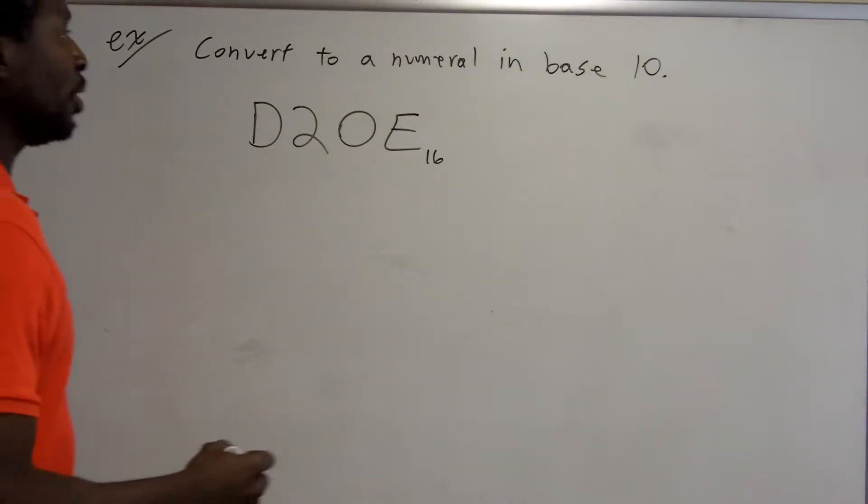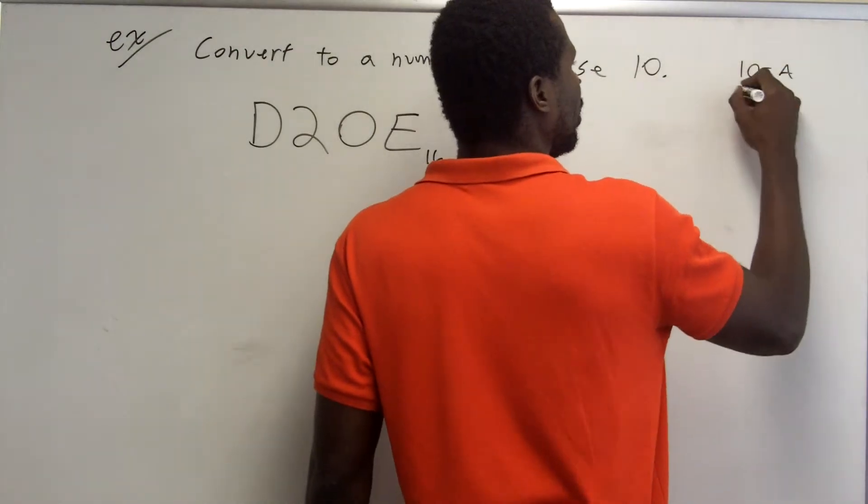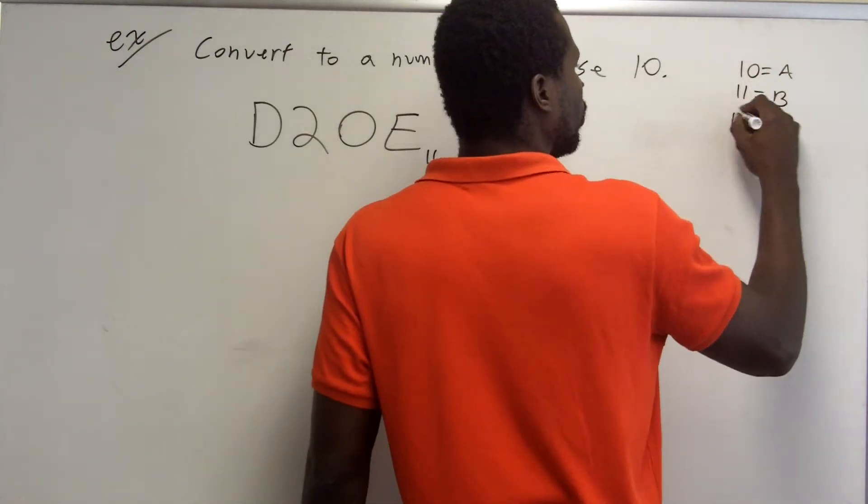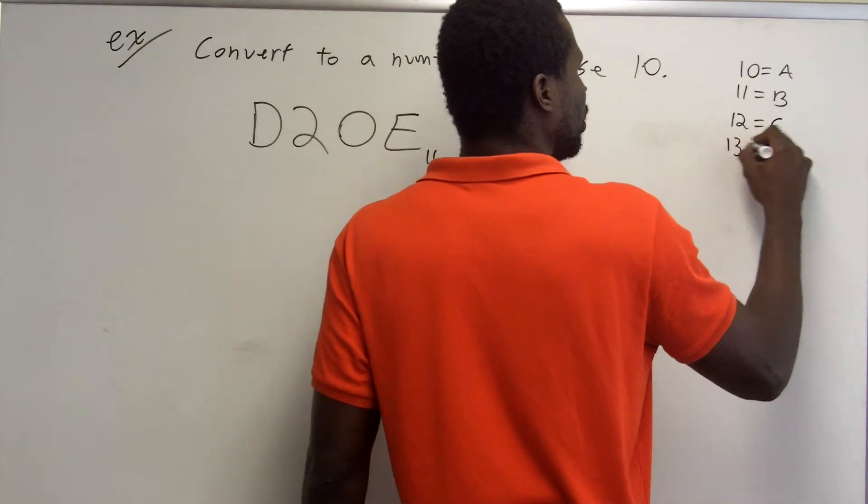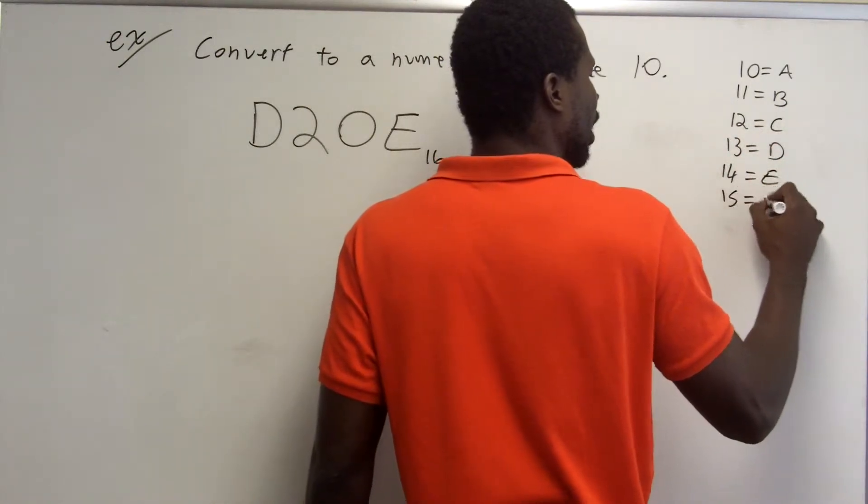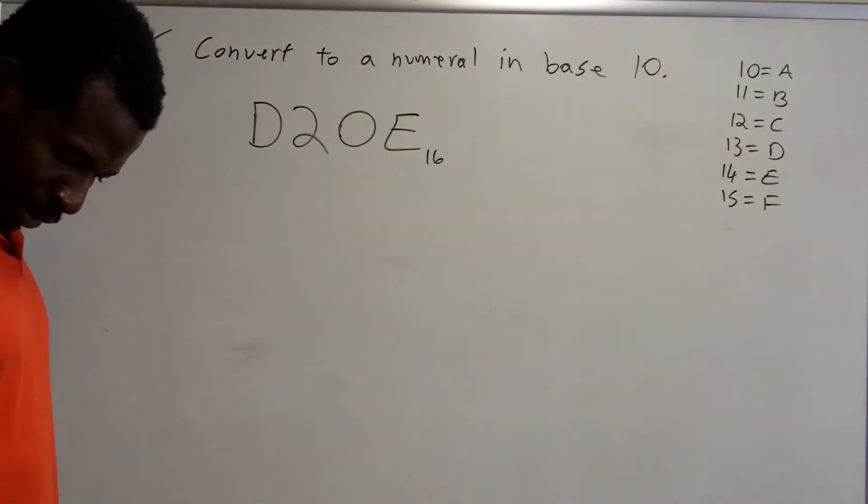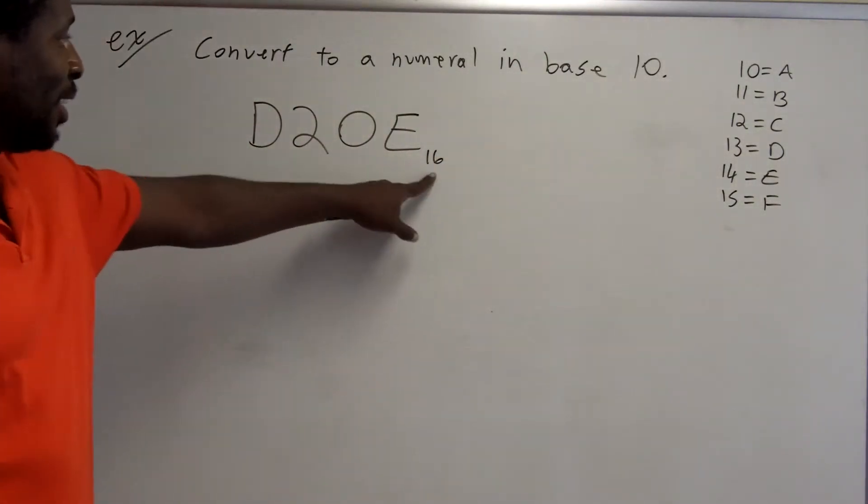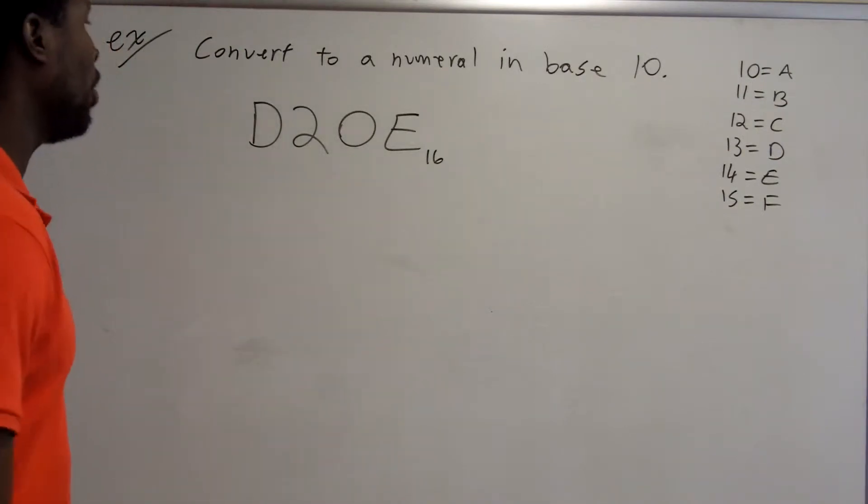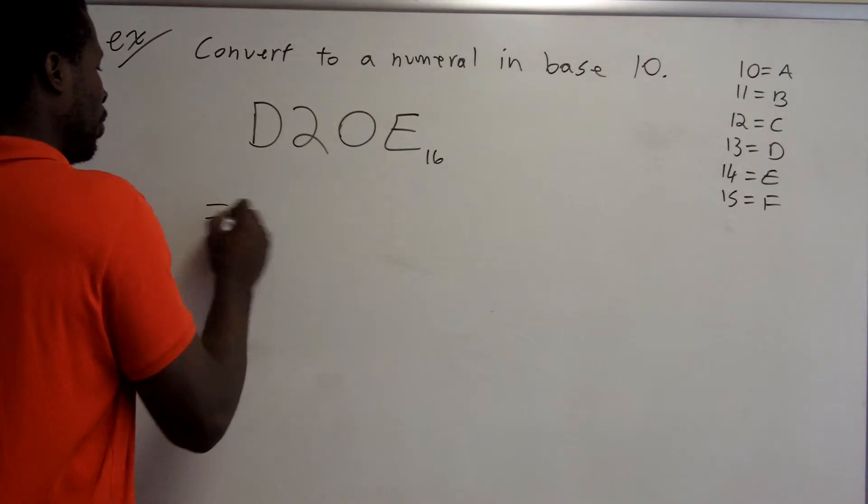D20E base 16. And I usually have my little cheat sheet here. So the number 10 is A, the number 11 is B, 12 is C, 13 is D, 14 is E, and 15 is F. Okay, so this is a base 16 or hexadecimal number. I want to convert it to the corresponding base 10 number. Well, it's just like what we were doing before.